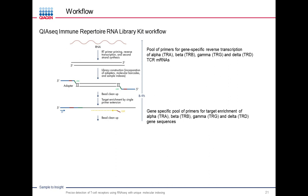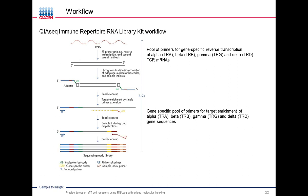After adding the unique molecular index via ligation, we use a gene-specific pool of primers to capture alpha, beta, gamma, and delta T cell receptor sequences. This targeted panel dedicates most sequencing reads to identifying these novel subunits. After a quick bead cleanup, we add the final sample index via a simple PCR reaction, do a final bead cleanup, and have a sequencing-ready library. We quantitate using a PCR method or bioanalyzer, then denature and load onto a next-gen sequencing instrument.